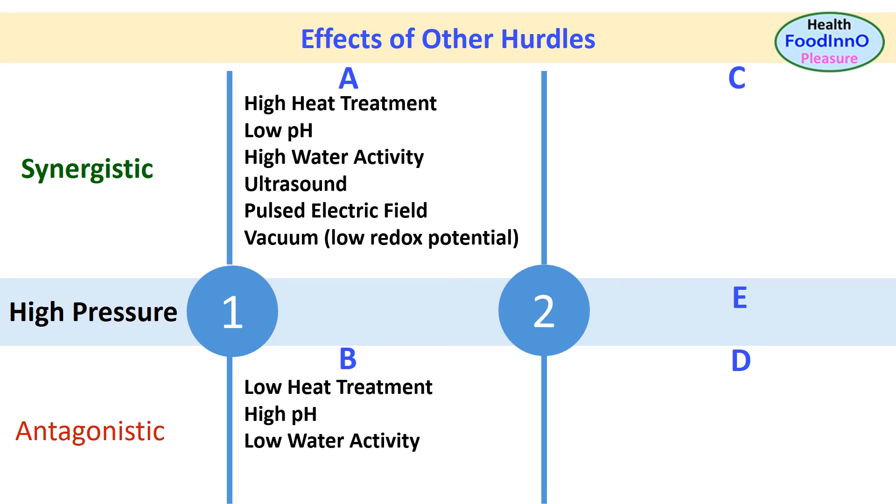In group 1B, the listed hurdles work as synergistic. These are low heat, high pH, and low water activity.